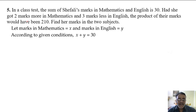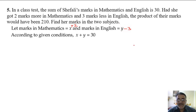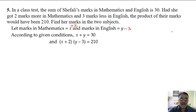Again, if she got two marks more in maths, that means x plus two. And three marks less in English, that means y minus three. The product of their marks would have been 210. So we get: (x + 2)(y - 3) = 210.